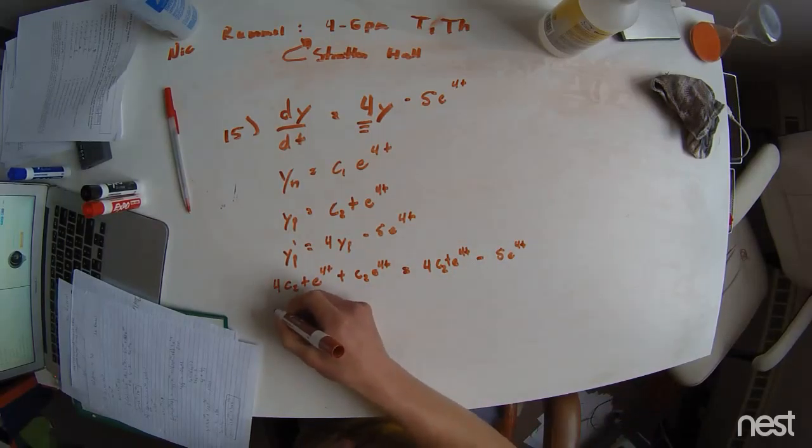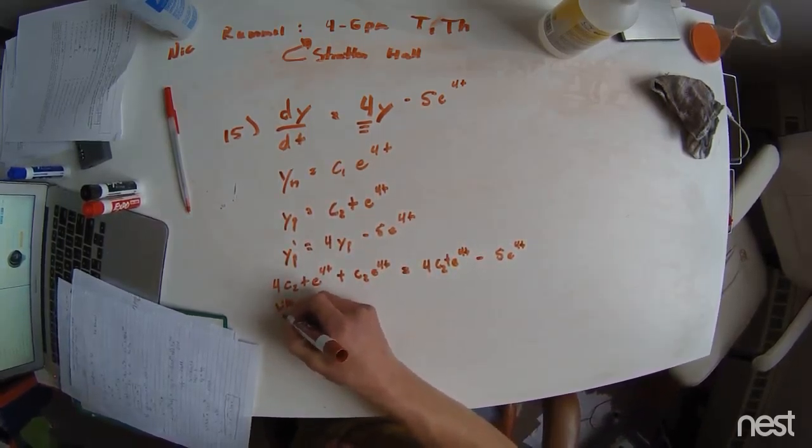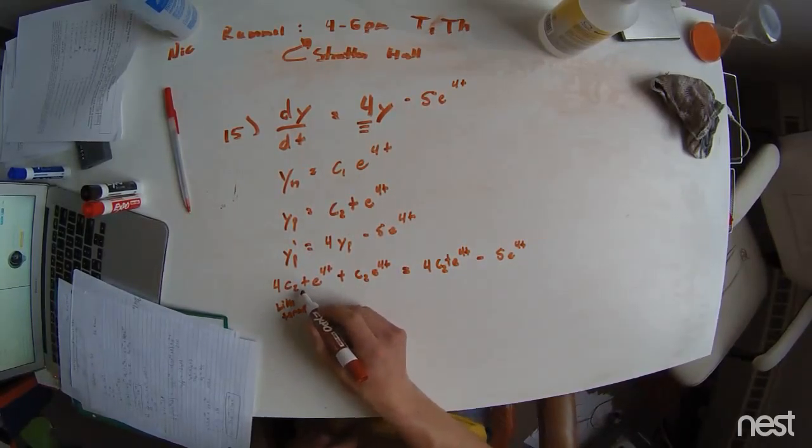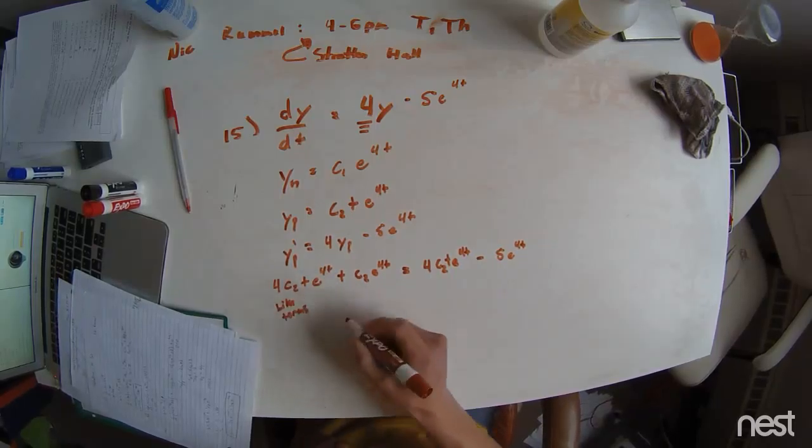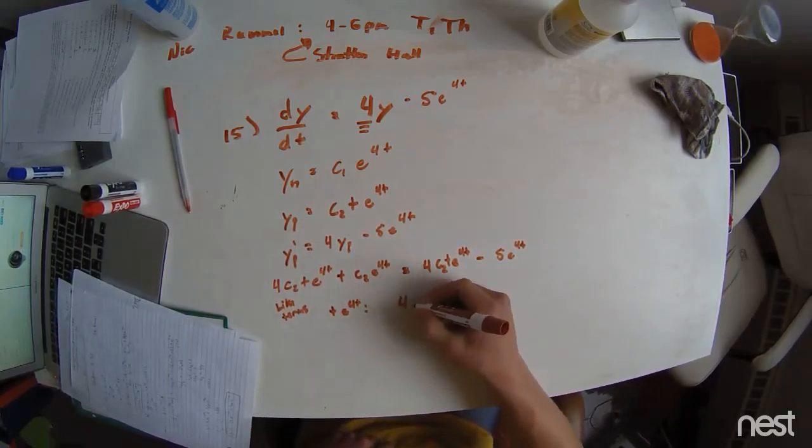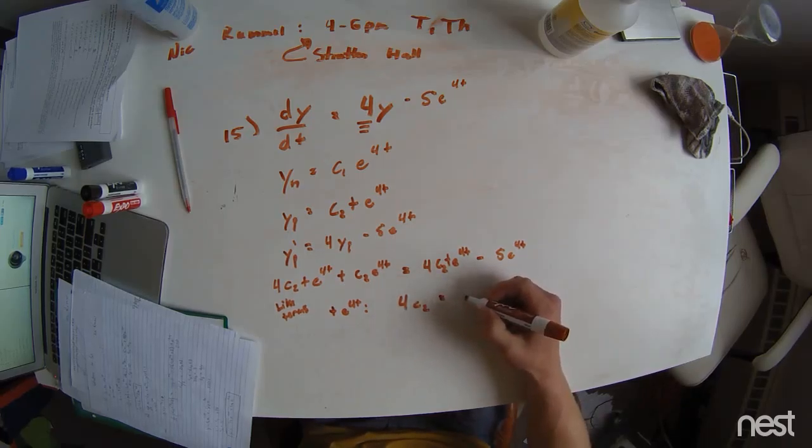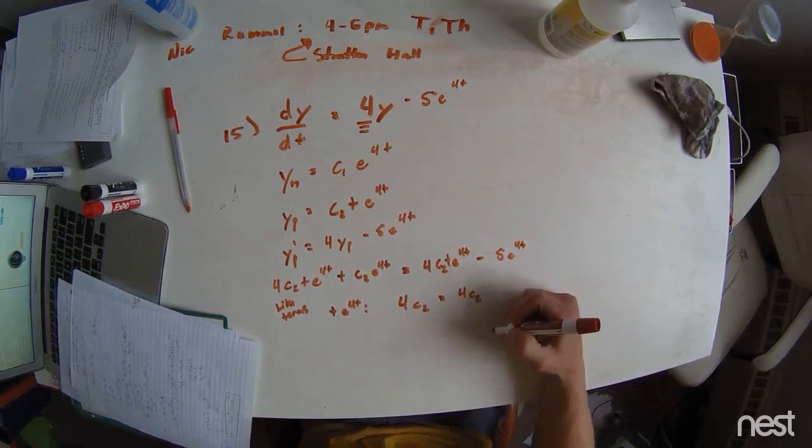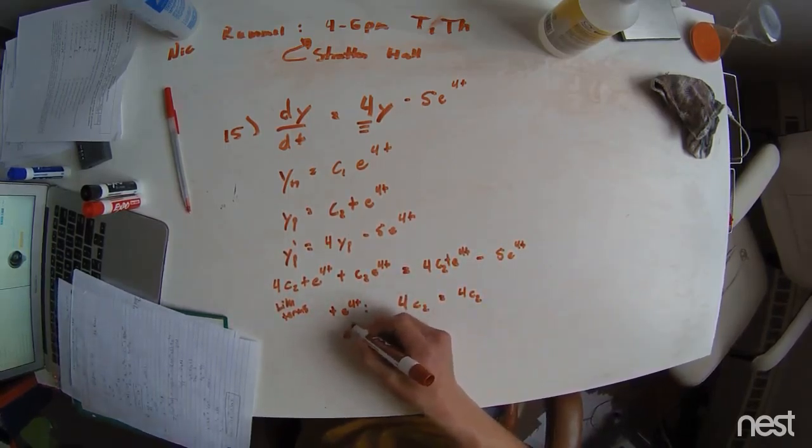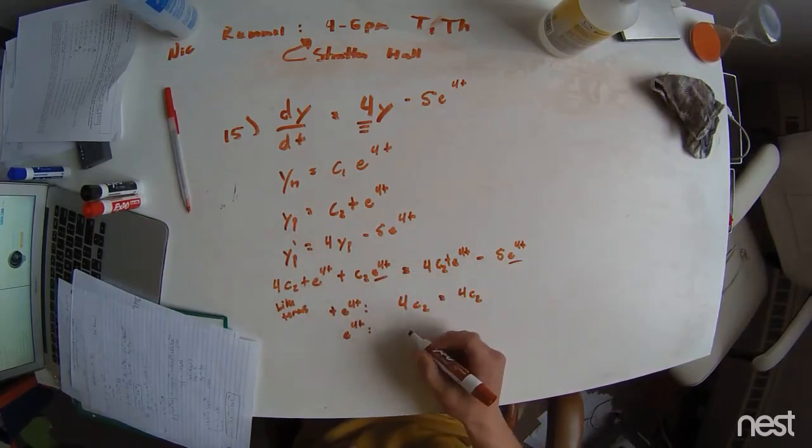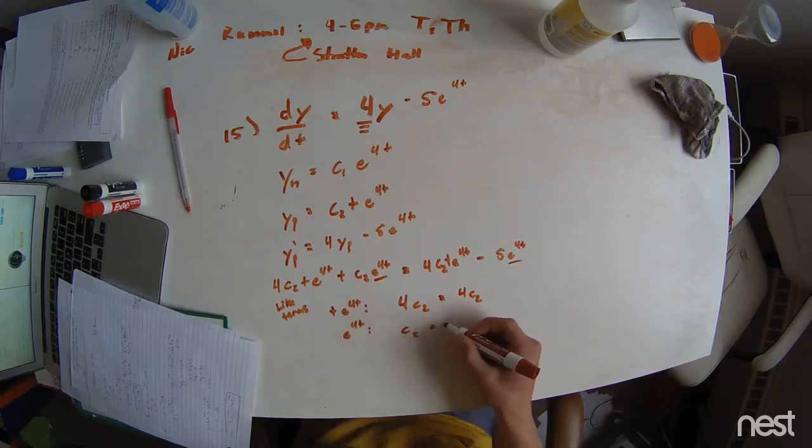We combine like terms. And we notice the terms with e to the 4t times t. We have 4C2 equals 4C2. And then we also have just the e to the 4t terms, which is this and this. And we see that those are C2 equals negative 5.